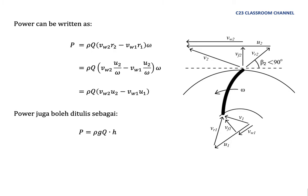And then the value of omega here can be cancelled out. So we could say that power is equal to rho Q, V world 2, U2 minus V world 1, U1. And then as we discussed in previous lesson, the general equation for power is rho G Q H. Now we could equalize this term with this term.